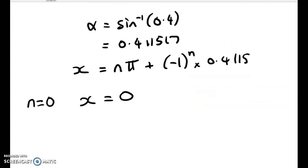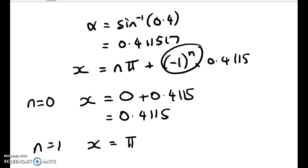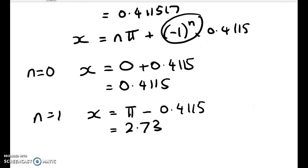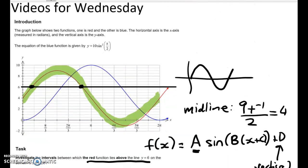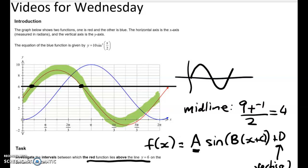So when n equals 0, x is equal to 0 plus 0.4115, because this thing is just 1. And when n is equal to 1, we get x is equal to pi take away 0.4115, which is equal to 2.73. Okay, so let's go back and see if those values make sense. Now we could have done that without using general solutions. So let's have a look. What we need to do now is, remember, we have to say the intervals between which the red function lies above the line y equals 6.